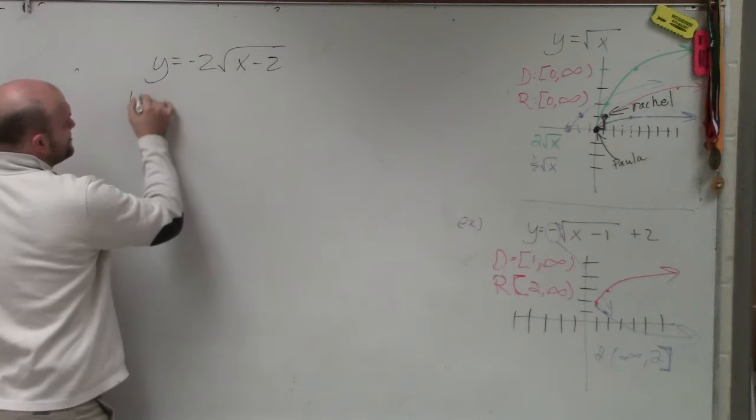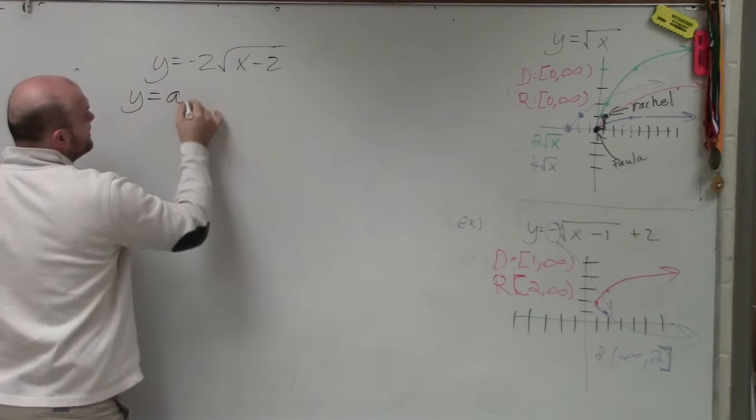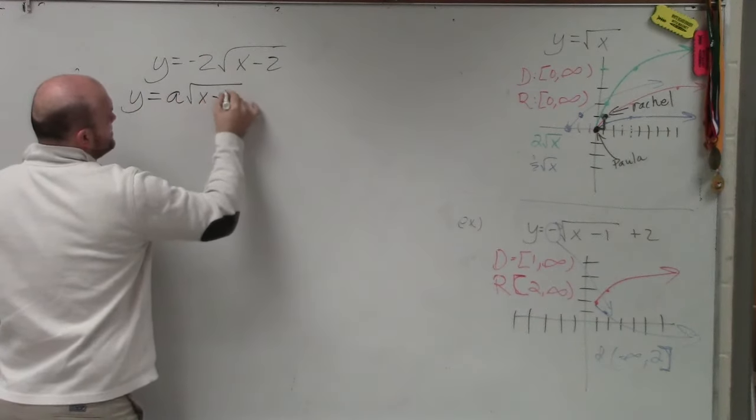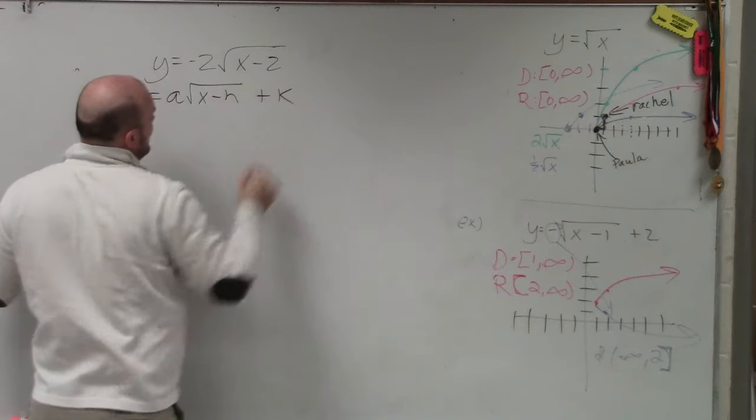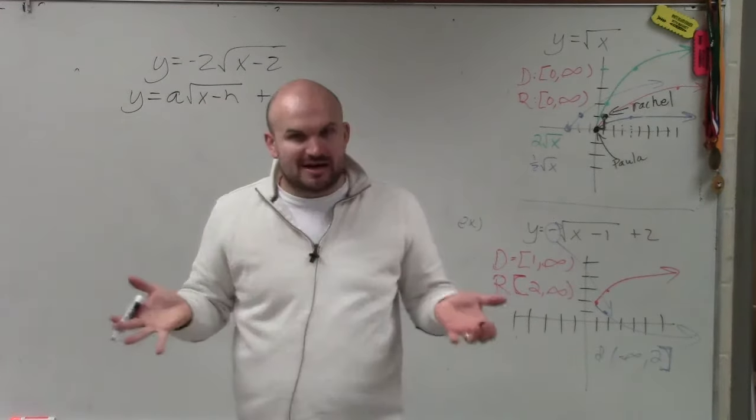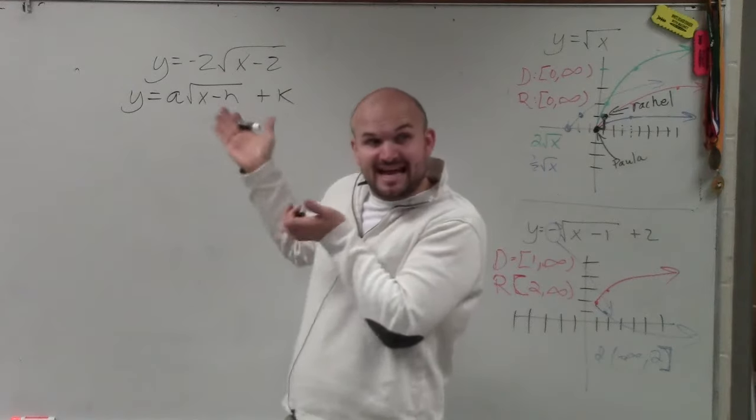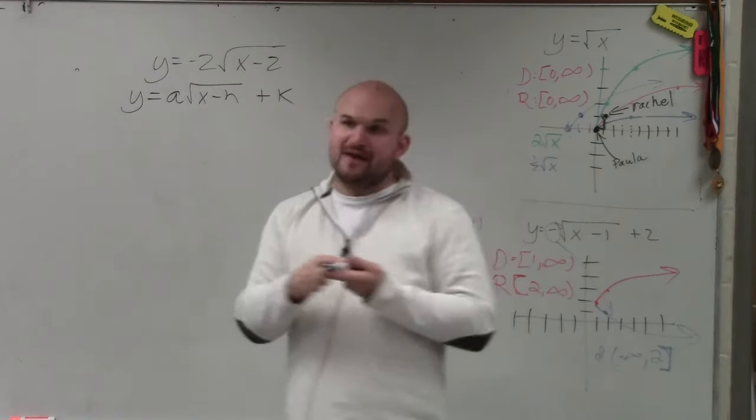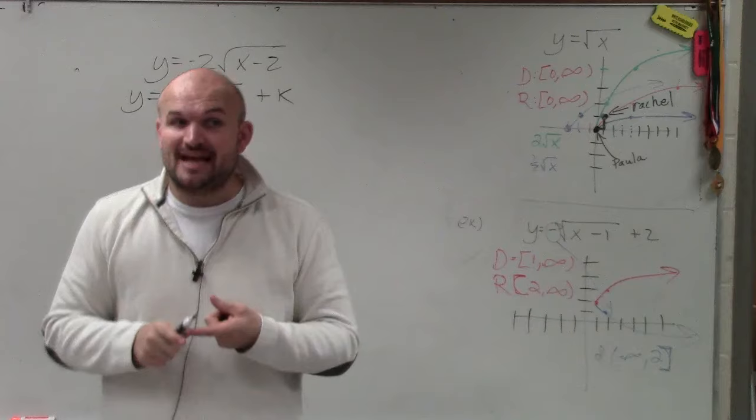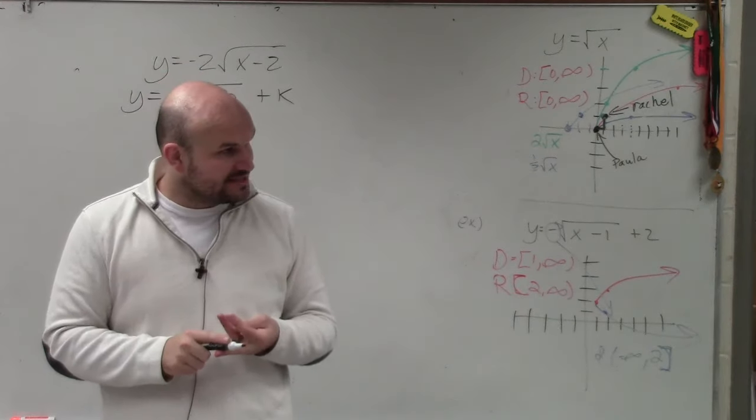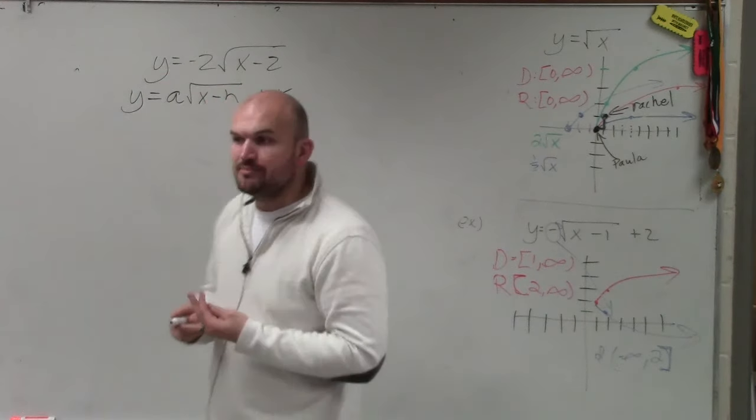And hopefully, you guys remember that transformation functions y equals a times the square root of x minus h plus k. Hopefully, you guys kind of remember that these are your transformations. This is the exact same a, h, and k that we had for absolute value, the exact same a, h, and k that we had for quadratics, as well as for cubic functions.